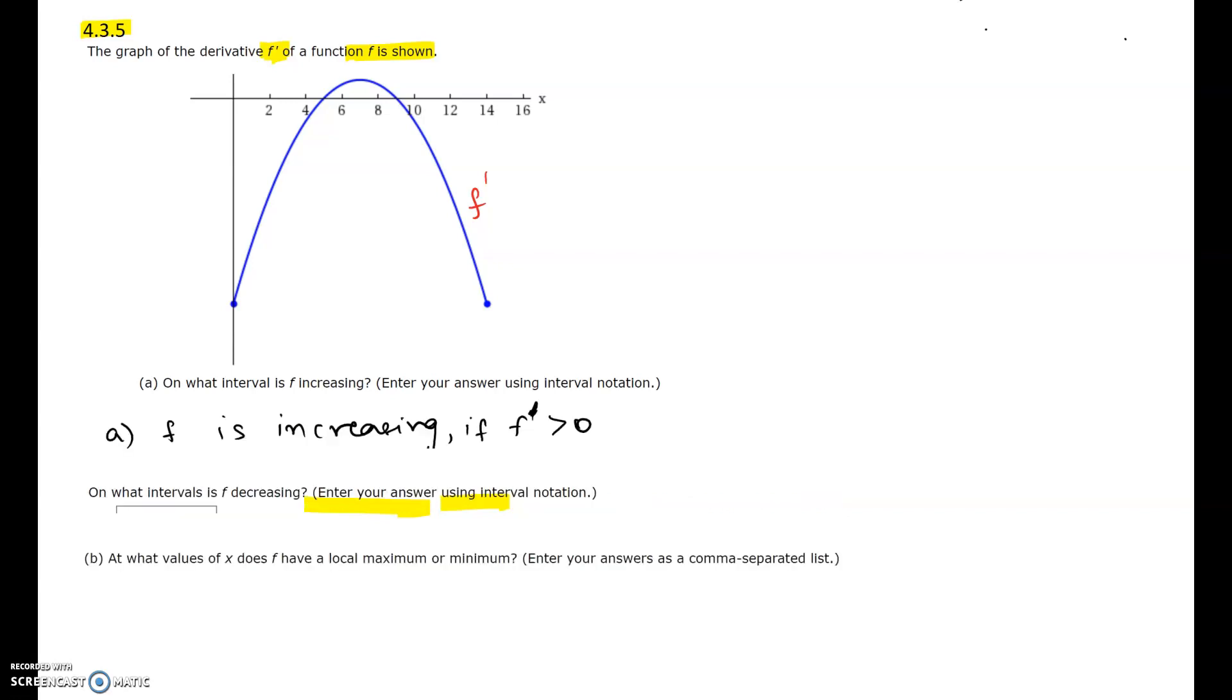We know that f is increasing if its derivative is positive, so we have to find where f' is positive. The blue graph is positive when it is above the x-axis. On the interval 5 through 9, the graph is above the x-axis, so f is increasing on the interval [5, 9].